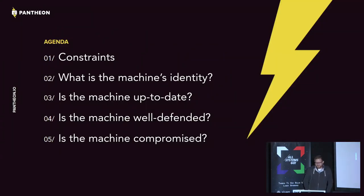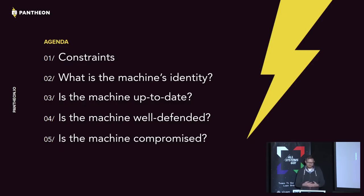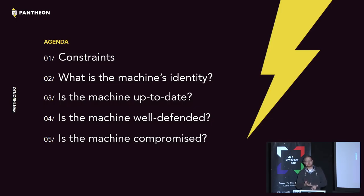I'm going to talk about the constraints we're working within, what I'm trying and not trying to accomplish, and then the core aspects we're trying to watch on these machines. We need to establish what the machine is — both locally and on the network — whether the software is up to date from a security perspective, whether the machine is well defended from a configuration perspective against local and remote attackers, and looking for indicators that the machine might be compromised.